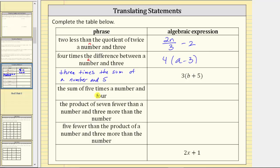And now we have several more phrases. The next phrase is 'the sum of five times a number and four.' Again, sum means addition, so we'll be adding five times a number and four. Let's use the variable w for the unknown number.